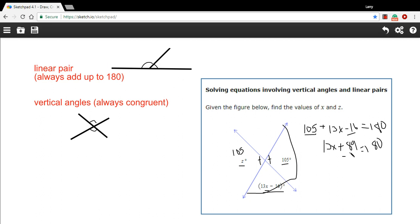Then I'm going to subtract 89 from both sides, and I get 13x equals 91. Then I just need to divide by 13 on both sides, and that gives us x equals 7.